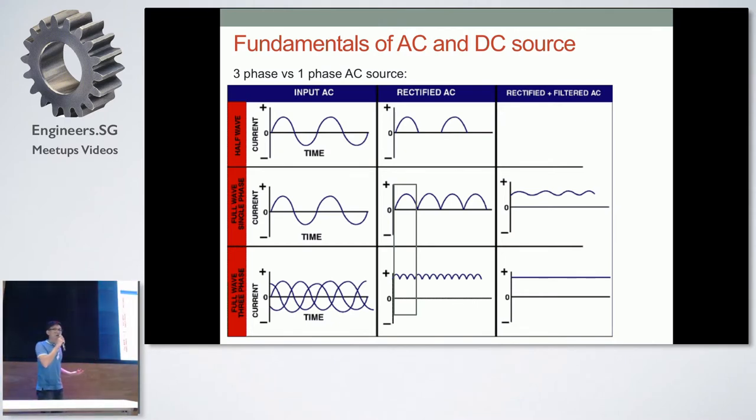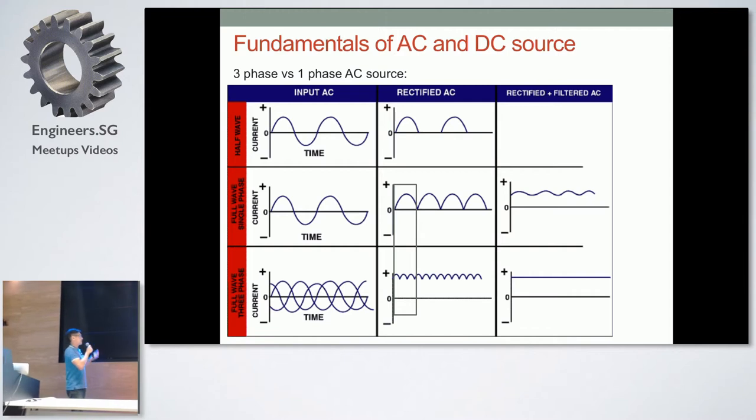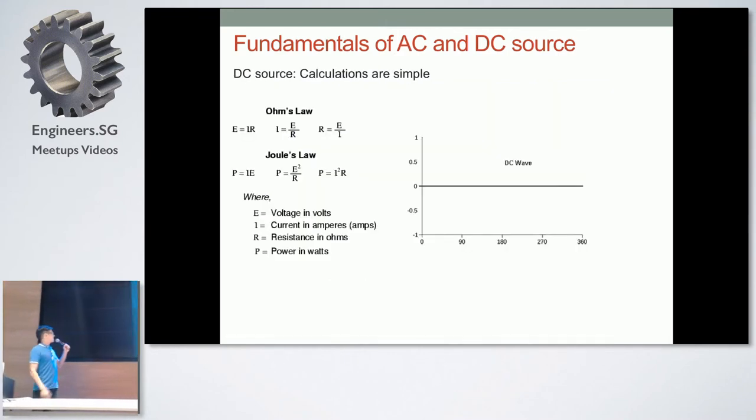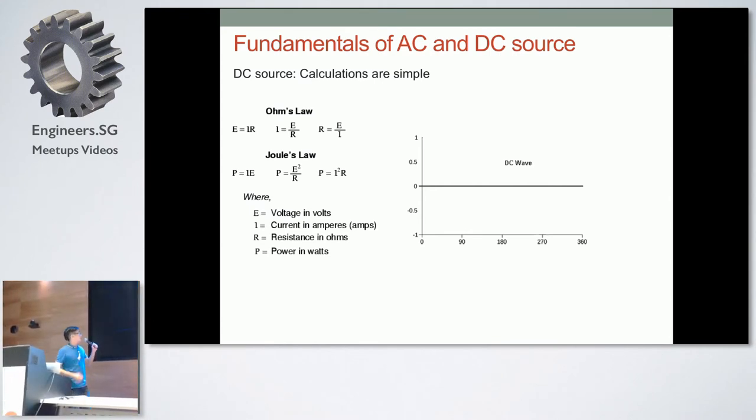This is the main big difference between three phase versus single phase. So the question is, do I need three phase for my stuff? For low end projects, you don't really need three phase, single phase is good enough. But when I operate factory machines like inductor winding machines, transformer winding machines, three phase is very efficient. It's cost efficient overall in terms of power saving. DC's law is very simple. You just need to know Ohm's law and Joule's law. Joule's law is basically to calculate power loss, I squared R.